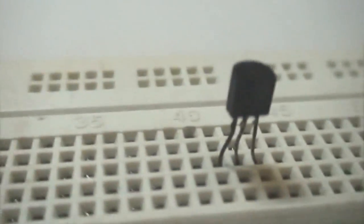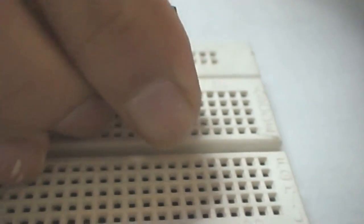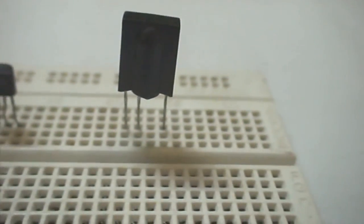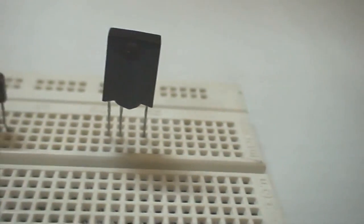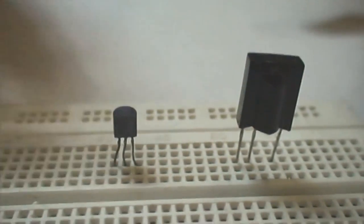We insert the 557 Transistor on the breadboard. You also insert the TSOP1738, we connect the emitter of the 557 Transistor to the positive rail of the breadboard.